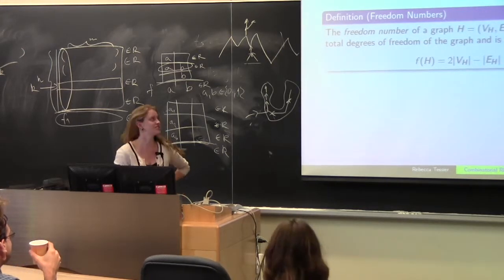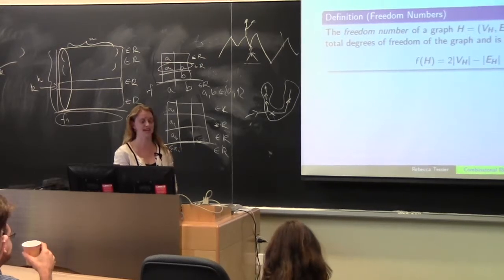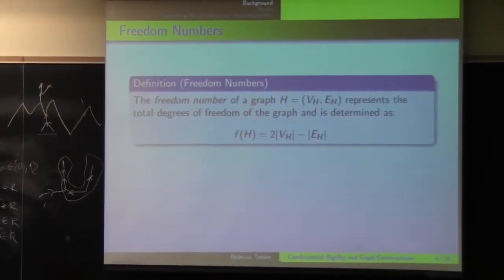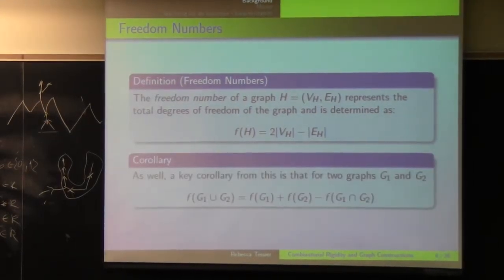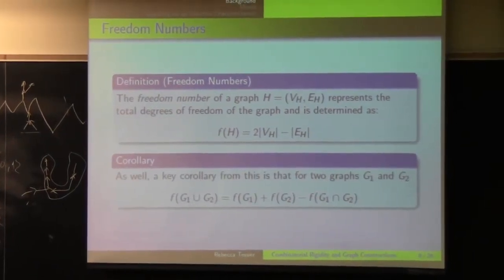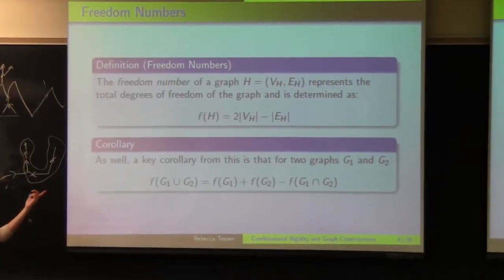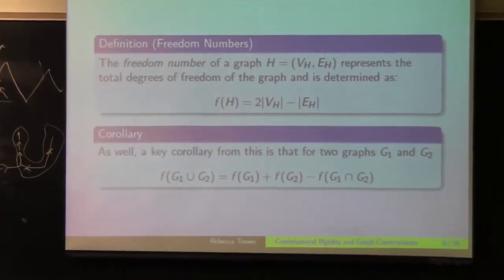So the freedom number of a graph, this is just some notation I'm going to use when I'm talking about some of the moves that I did. So it represents the total degrees of freedom of the graph, which for a KL-tight graph is L. And it's equal to 2 times the vertices minus the number of edges. As well, a key corollary that I used when I was proving things is that for any two graphs, the union of those graphs, the freedom number is equal to the freedom number of the two graphs minus the freedom number of their intersection.